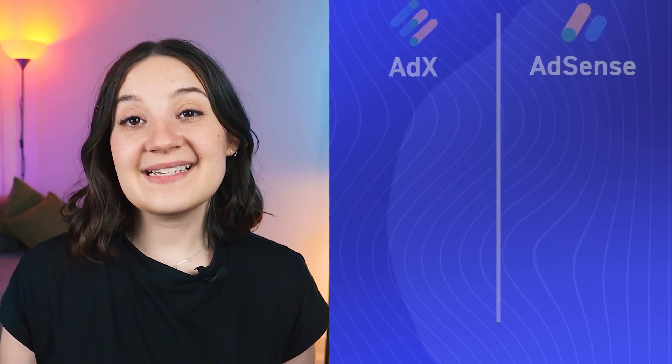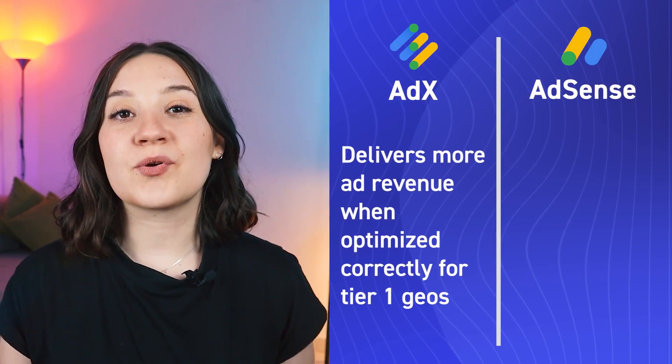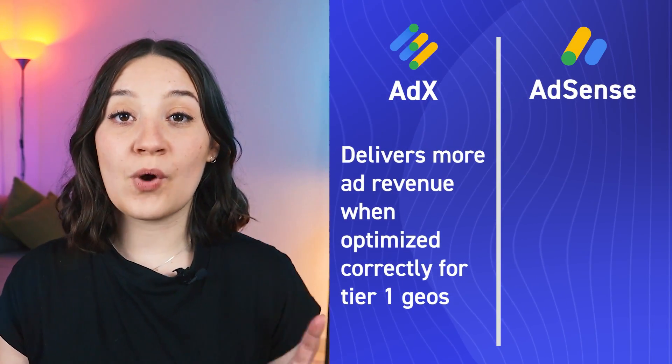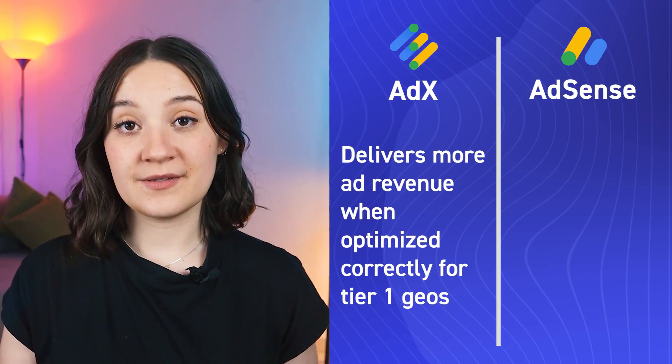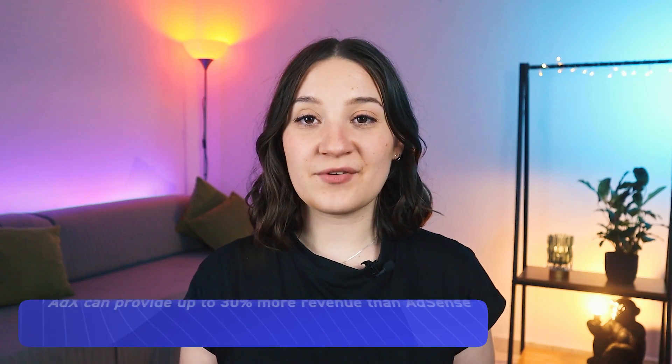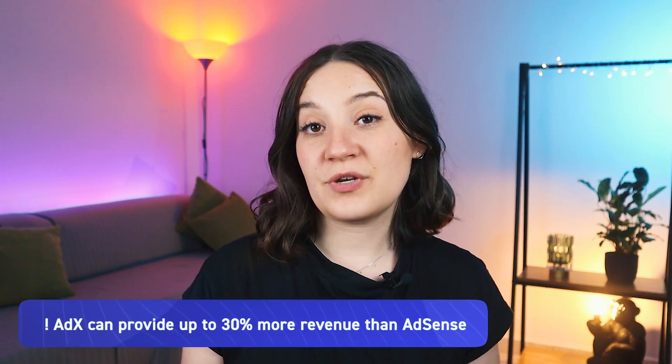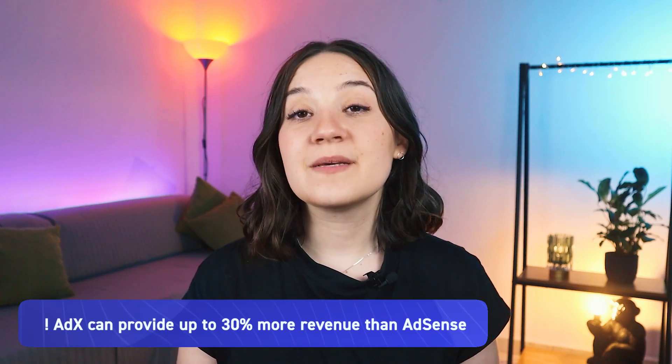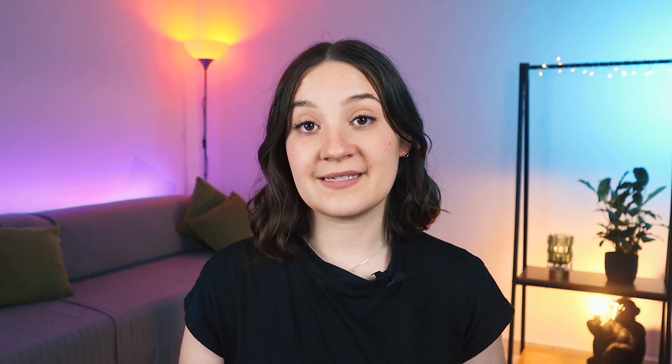In case you're not too sure which countries belong to which GEOs, we have a list linked below. AdEx delivers more ad revenue when set up correctly for Tier 1 GEOs. With an optimized dynamic flooring setup, Google open bidding, and preferred deals, publishers can expect their ad revenue to increase between 10 and 30% when switching from AdSense to AdEx.